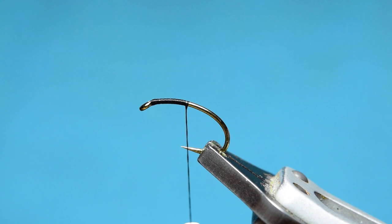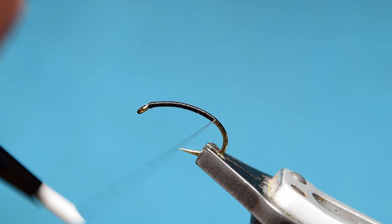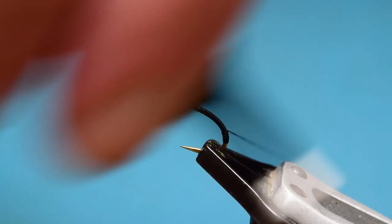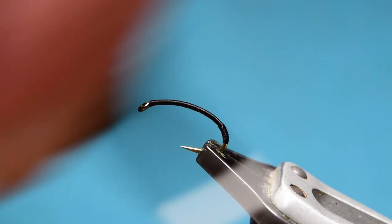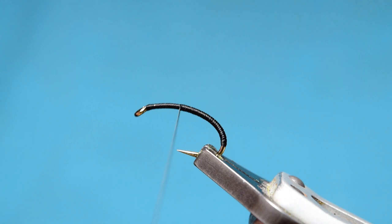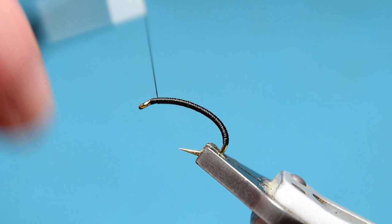And now just continue to work the thread down about halfway around the bend, and then you can start working the thread back up. This is all you need for the body of this fly, you do not need any more thread than this. That will do for the whole fly on the body pretty much, but the thorax is slightly different.